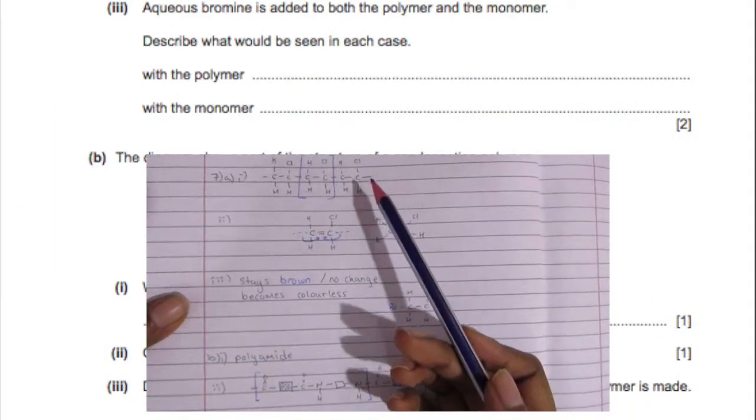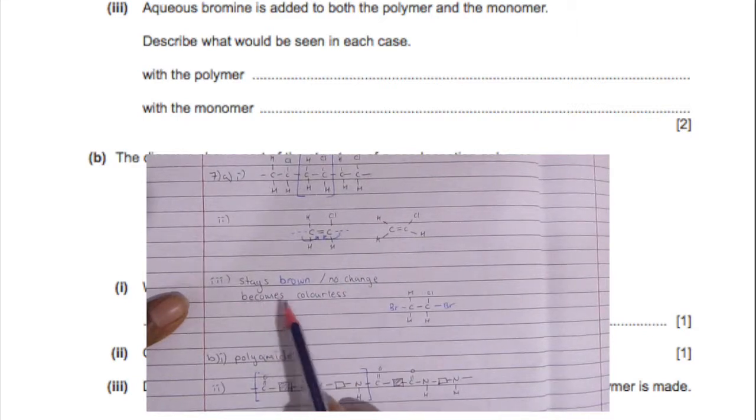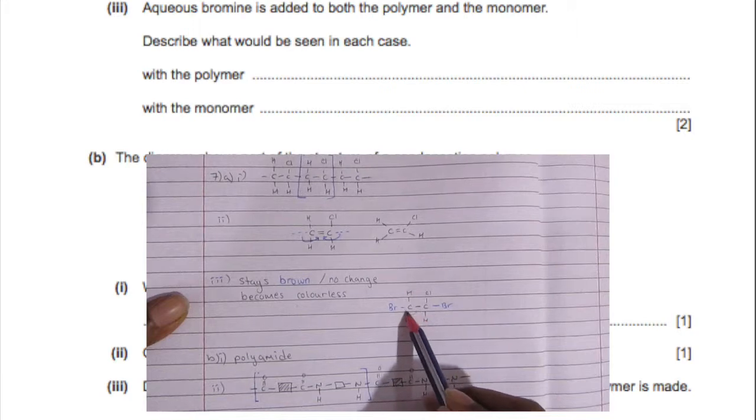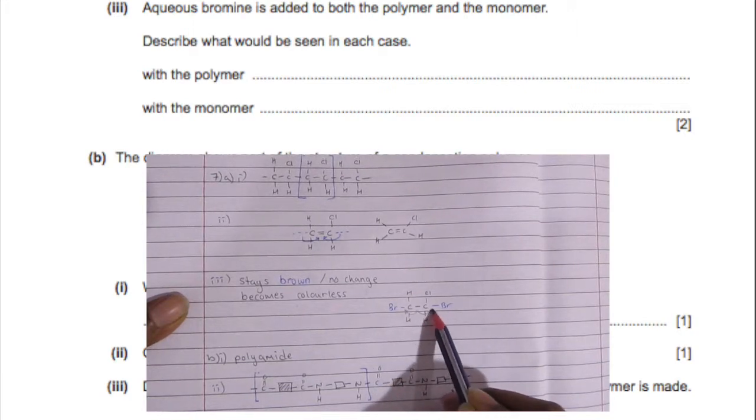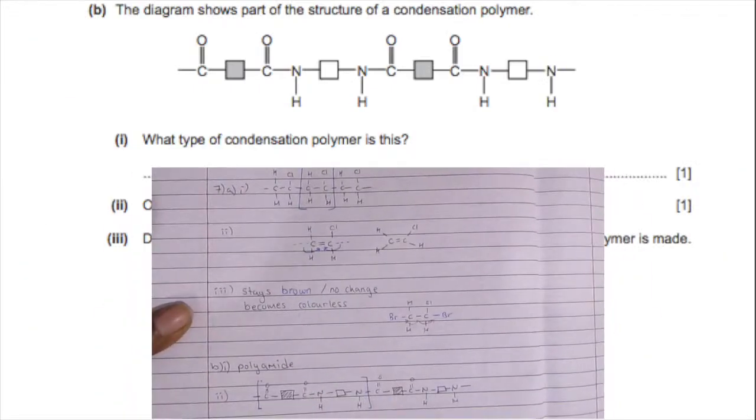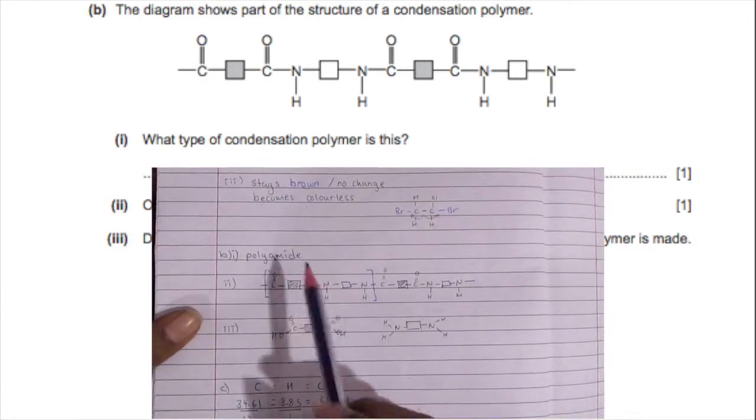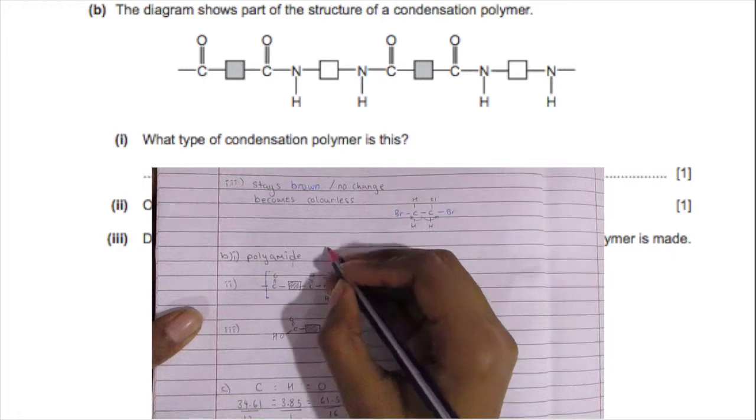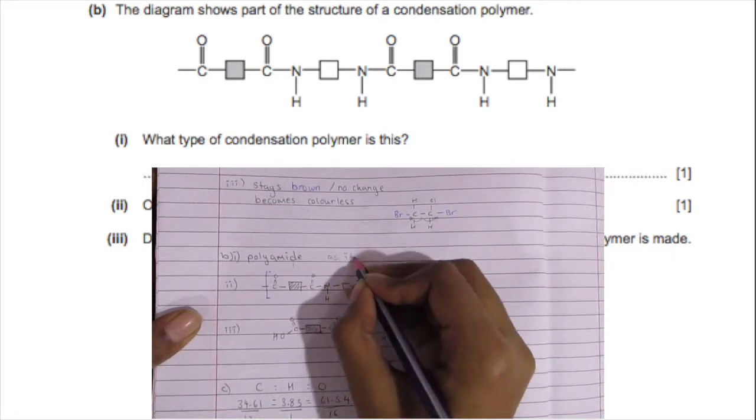Now bromine water is used to, or aqueous bromine is used to basically test for double bonds. And so if there's a double bond it's going to open up and bond to the bromine molecule, or the bromine atoms, and that is how it gets decolorized or it becomes colorless from brown to clear. But of course with the polymer nothing goes on so it just stays brown.